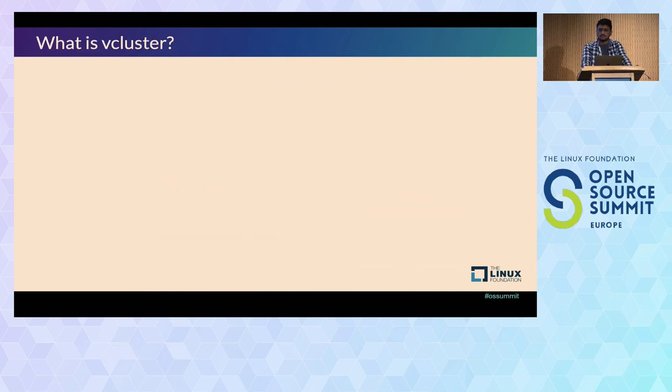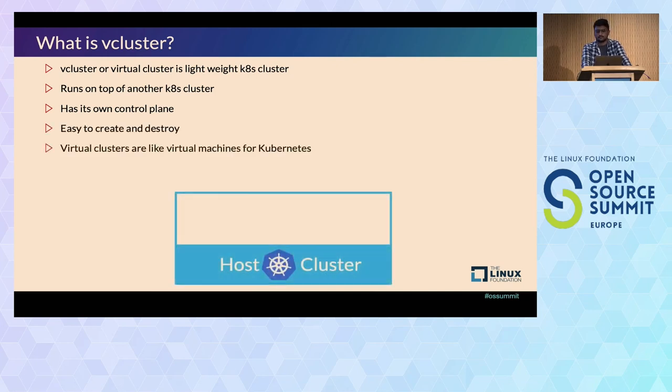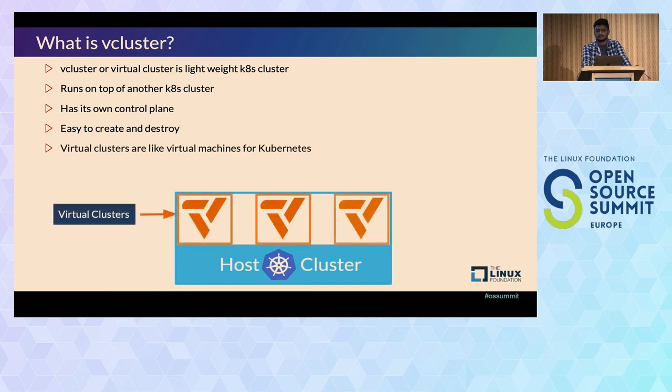So what is vCluster then? The vCluster or virtual cluster is a Kubernetes distribution that runs on top of another Kubernetes cluster. It has its own control plane, so no two tenants will interact with the same API server or with the host API server. It is lightweight and compared to the full-fledged cluster it takes very little time to provision. Like virtual machines, virtual cluster partition host cluster into multiple logical clusters.